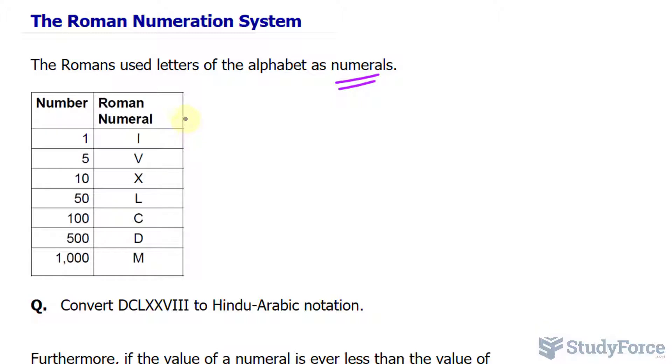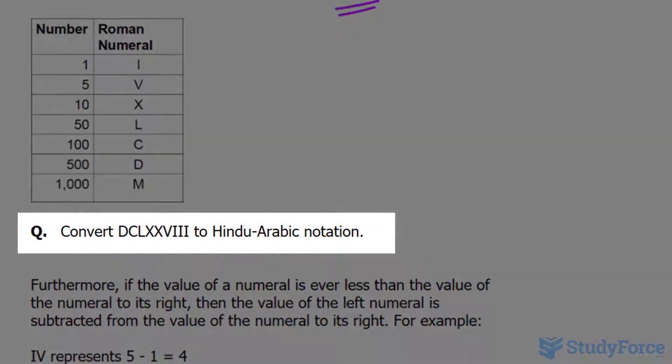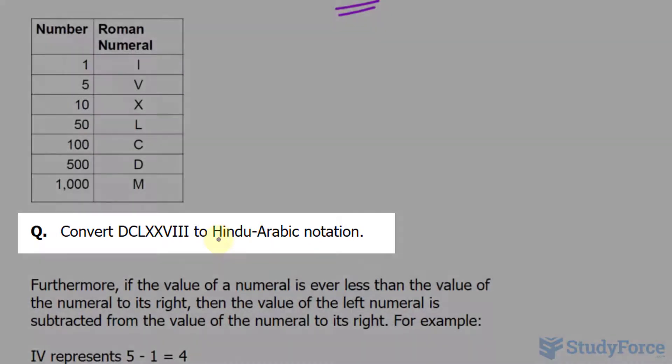The Roman numerals are shown on your screen, and using these symbols we can essentially come up with any integer number at least. They use a different system for representing decimals and fractions. We won't be discussing that in this video. So in our very first question, we are asked to convert DCLXXVIIII to Hindu-Arabic notation.